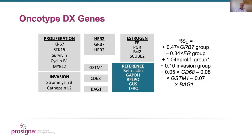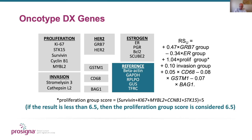The Oncotype DX is somewhat different in the genes it selected. There are 16 informative genes and five reference or housekeeper genes. The biggest group is the proliferation group, and on the equation on the right hand side the coefficient of the proliferation group is the highest at 1.04. So many people believe that proliferation is the driving force for the Oncotype DX.